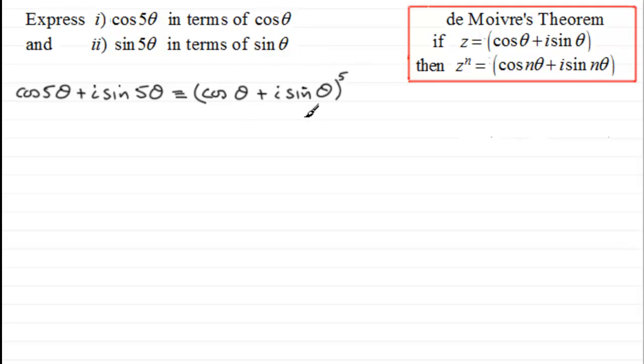Now when it comes to expanding this, this is quite lengthy. So what I'm going to do is just move this to the side here. I'm going to rewrite this as being identical to (c + is)^5, c for cos(θ) and s for sin(θ). And if I do expand this, then what we've got is that this is identical to...